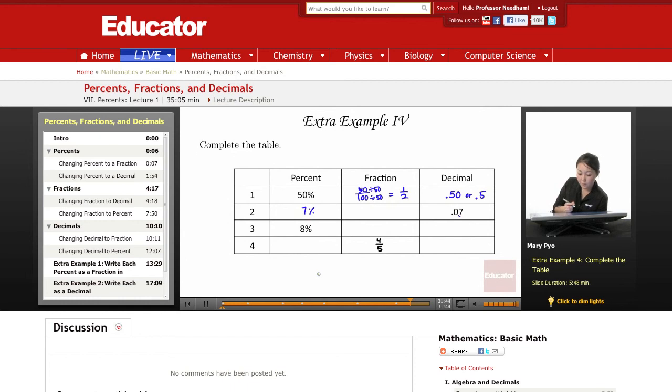Now to change this to a fraction. Remember percent to a fraction, you just put it over 100. Or from a decimal to a fraction. Remember, you count the number of numbers behind the decimal point. That's 2. So you're going to put two 0s in the denominator. So either way, it's the same thing. So it's 7 over 100. Now see if you can simplify. No, because there's no common factors. No numbers that go into both 7 and 100. So that's it.